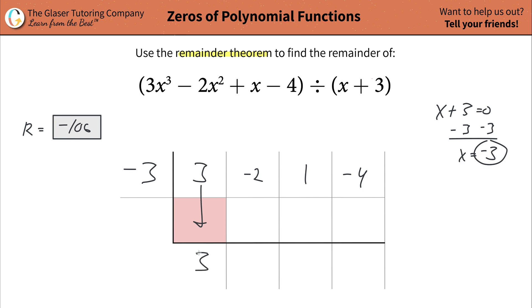So bring the three down, then you multiply this three by the outside three, that's going to become a negative nine, you add this column up. So that's going to be a negative 11. Then what you do is take this result, multiply it by that outside value, negative times a negative is a positive, three times 11 is going to be 33. And then you add this column up. So that's going to be a 34.